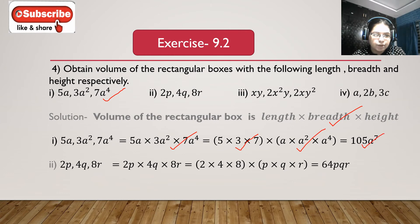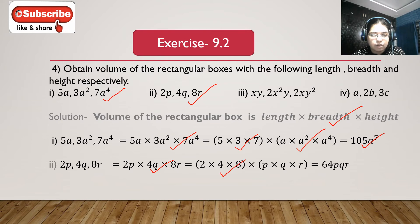Second bit: 2p, 4q and 8r. Volume is 2p multiplied with 4q multiplied with 8r, giving 2 multiplied with 4 is 8, and 8 multiplied with 8 is 64. So we get 64pqr.